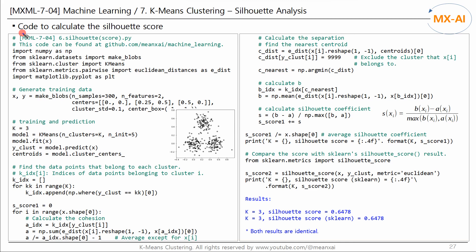Next, let's write code to calculate the silhouette score. We will use scikit-learn's k-means model and the Euclidean Distances class for distance calculation. Generate data, fit the model, estimate the cluster number of each data point, and find the coordinates of the centroids. We then find the data points belonging to each cluster and calculate cohesion and separation for all data points. Calculate the distance between data point xi and other data points in the same cluster, then calculate the average — excluding xi itself.